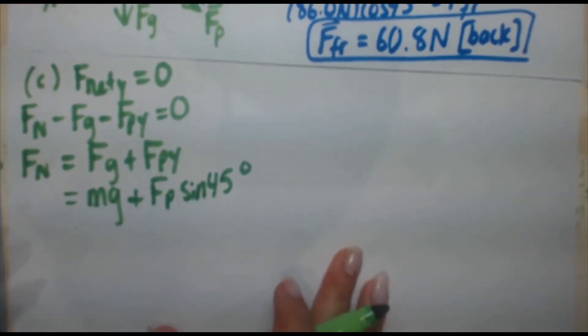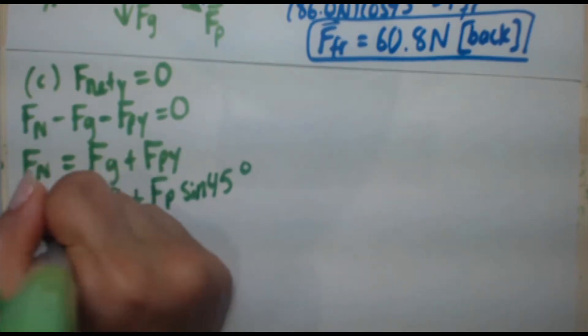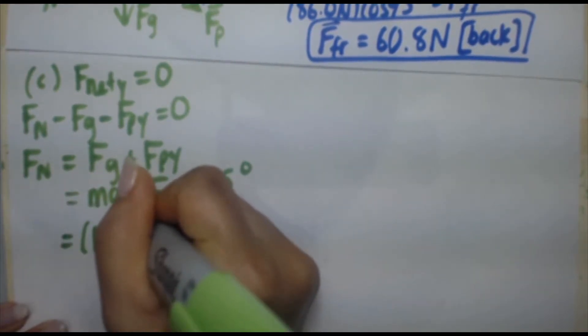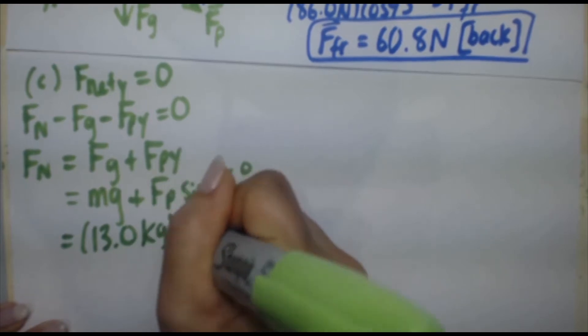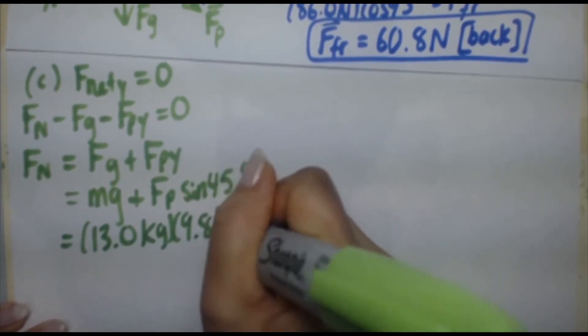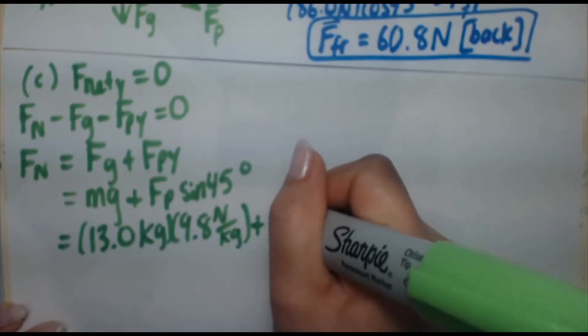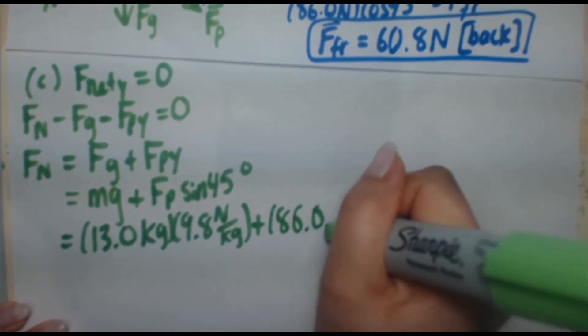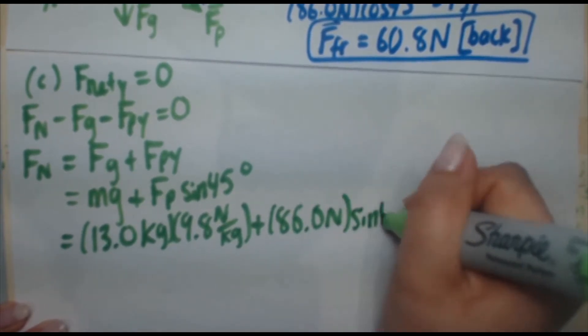So mass is 13.0 kilograms. G is 9.8 newtons per kilogram. Plus fp, which is 86.0 newtons, sine of 45 degrees.